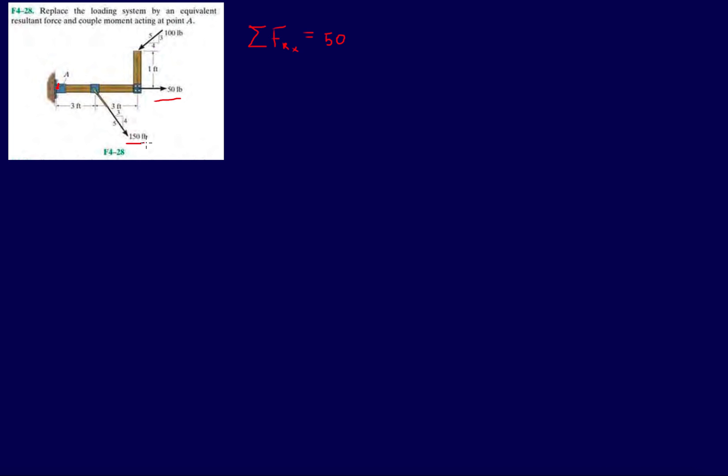We have a 3-4-5 triangle and this 150 pound force needs to be split off into its X and Y direction. So the horizontal force here is going to be positive 150. The side that's parallel to the X axis in this 3-4-5 triangle is going to be the three, so it's gonna be three over five.